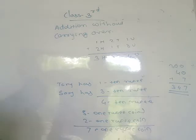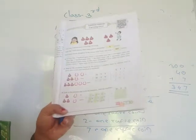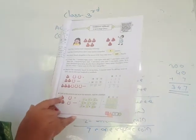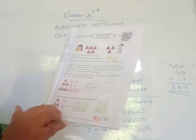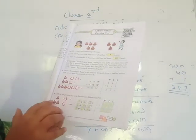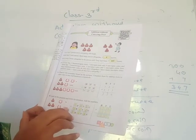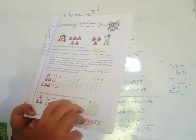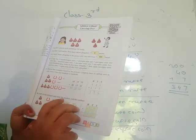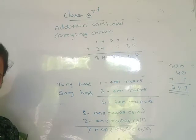Second example: look at the pictures and write the numbers, then add. Hundreds place 1, tens place 1, units place 2. Then hundreds place 2, tens place 1, units place 5. Write unit place below unit place, tens place below tens place, and hundreds place below hundreds place, then do the addition.